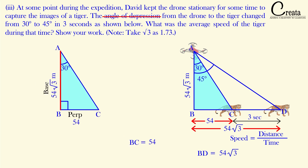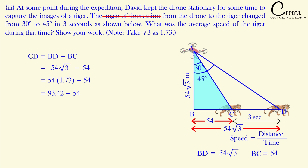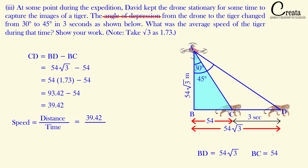We got the two distances: 54√3 meters and 54 meters. The distance between the two locations of the tiger = 54√3 − 54. Using √3 ≈ 1.73, distance = 54 × 1.73 − 54 = 93.42 − 54 = 39.42 meters. Speed of tiger = distance / time = 39.42 / 3 = 13.14 meters per second. That is the answer. We have completed all parts of this question.